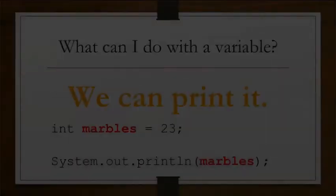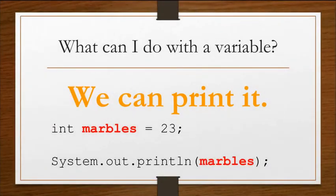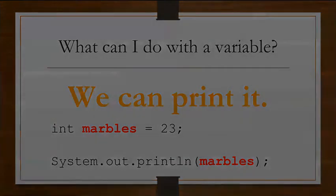Or for now, we can print variables. So if you have code int marbles equals 23, and then a print statement, system.out.println marbles, this is going to print 23.